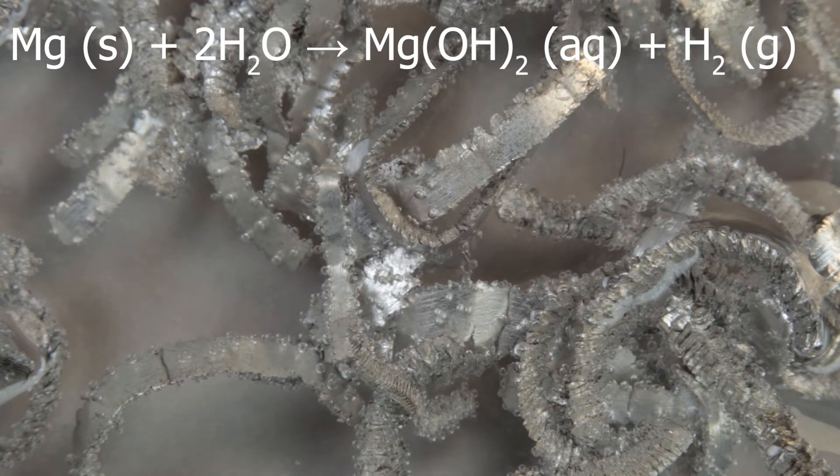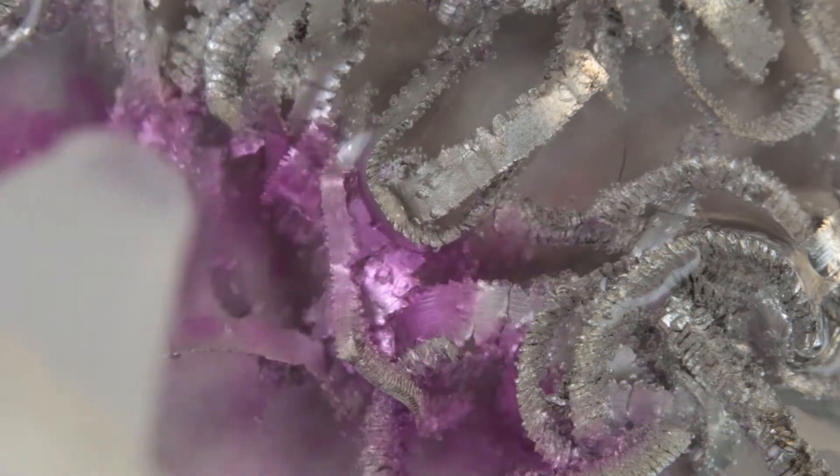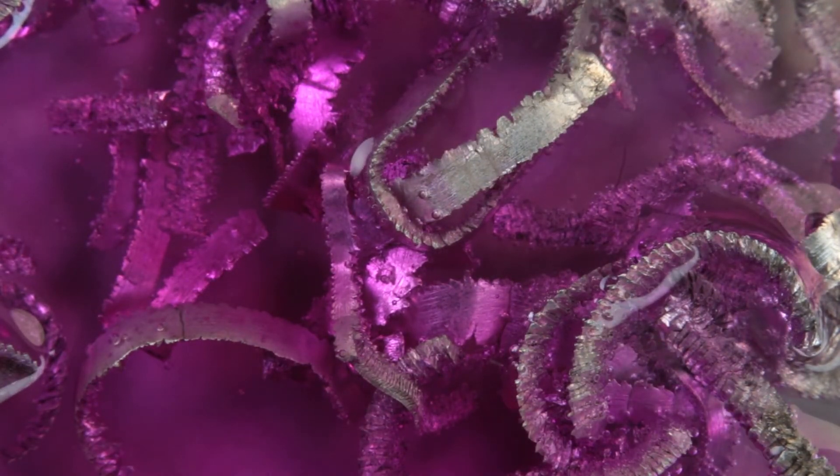Another product is magnesium hydroxide, which is slightly soluble in water, turning solution alkaline. If I take an indicator, phenolphthalein, yes, it turns violet, confirming alkalinity.